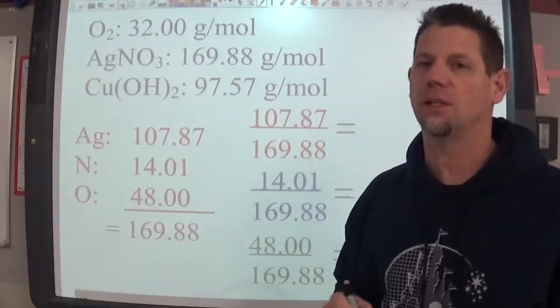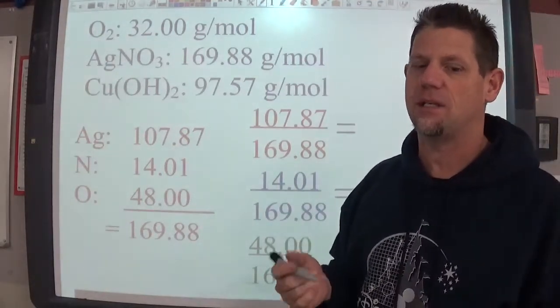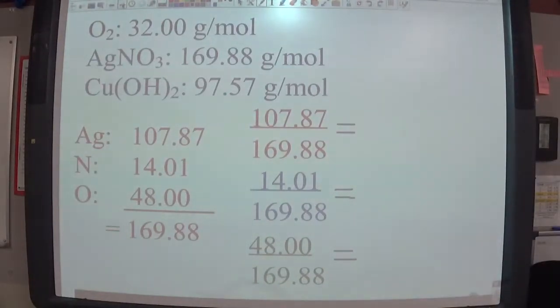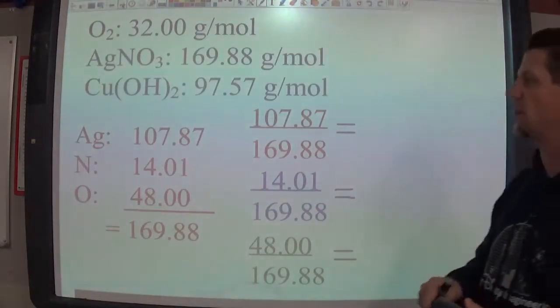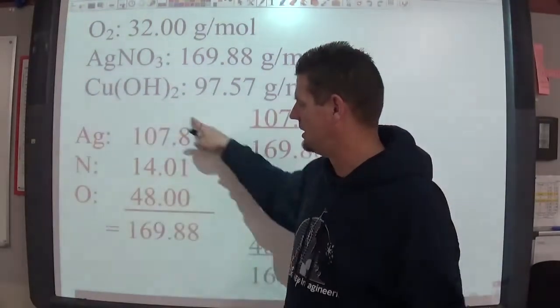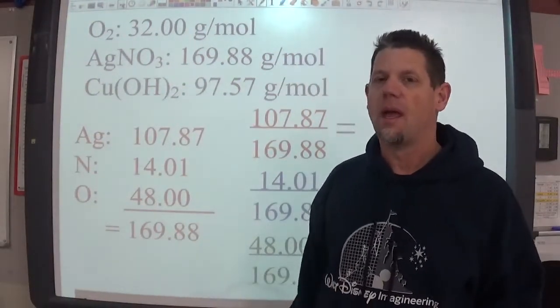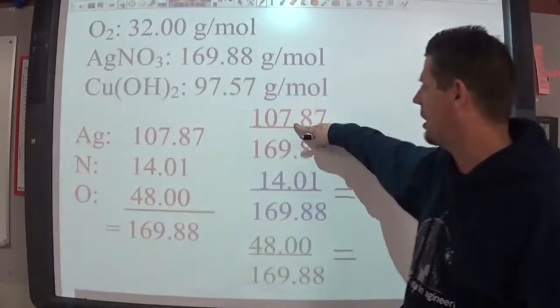But now what we need to look at is what percentage of the entire thing comes from those individual atoms. So silver nitrate is all of these things stuck together to be 169.88 grams per mole. How many of those grams come from silver?